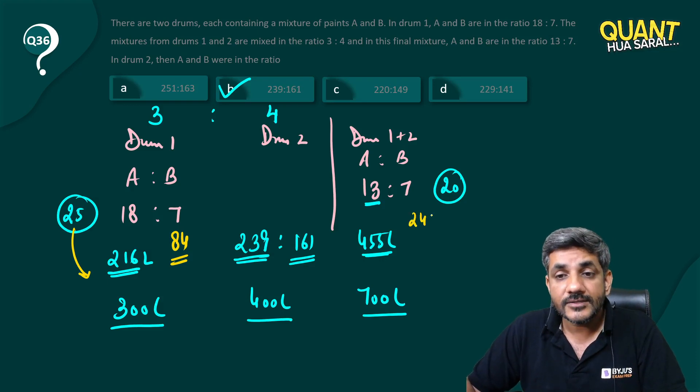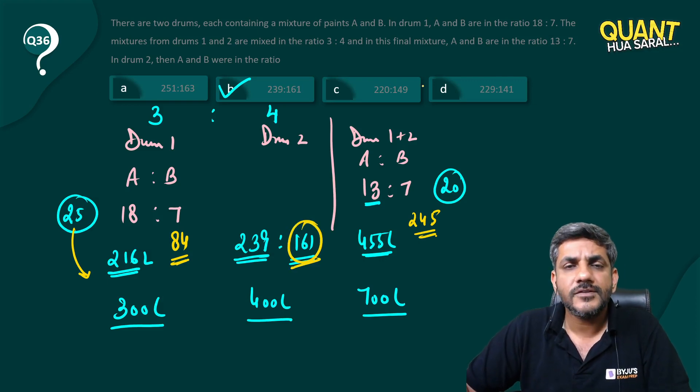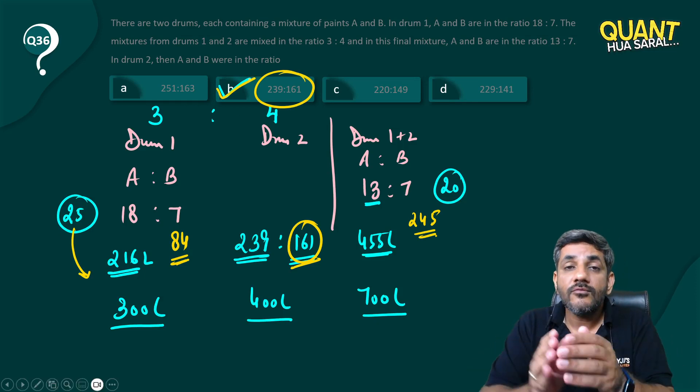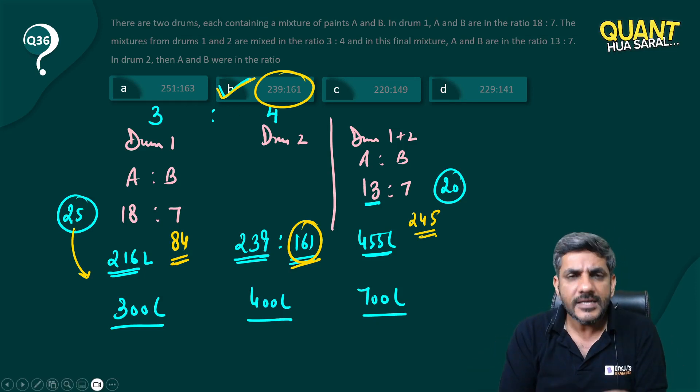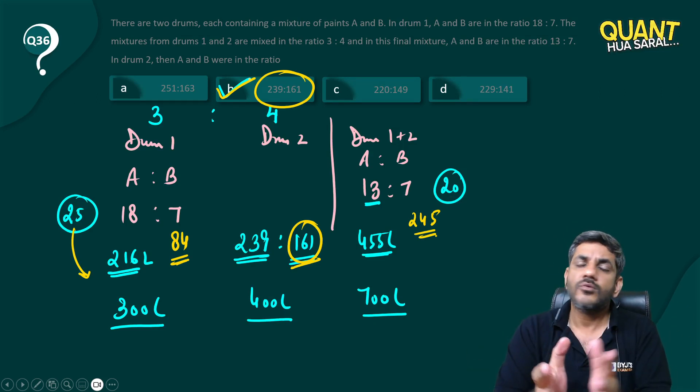And 245 minus 84 is straightaway 161. If I look at all the options, which option has 161? Option B is the only one which is having 161, so that would have probably made your job a little more easier than this.